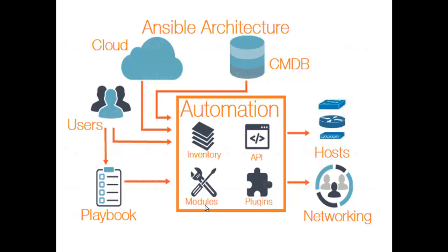Plugins allow executing Ansible tasks as a job build step. Plugins are pieces of code that augment Ansible's core functionality. Ansible ships with a number of handy plugins and you can easily write your own. For example: Action plugins are front-ends to modules and can execute tasks on the controller before calling the modules themselves. Cache plugins keep a cache of facts to avoid costly fact-gathering operations. Callback plugins enable you to hook into Ansible events for display or logging purposes.